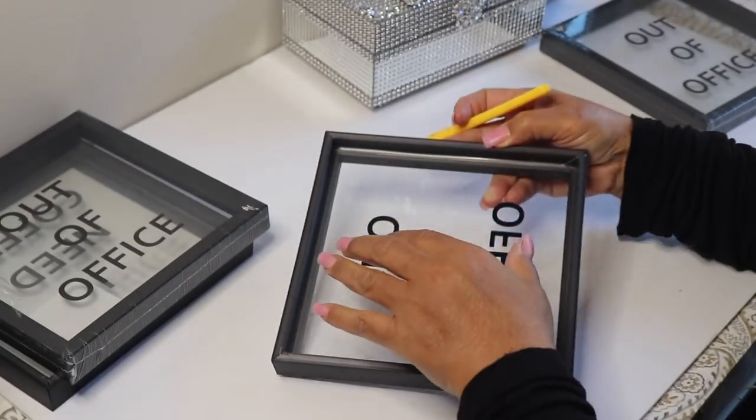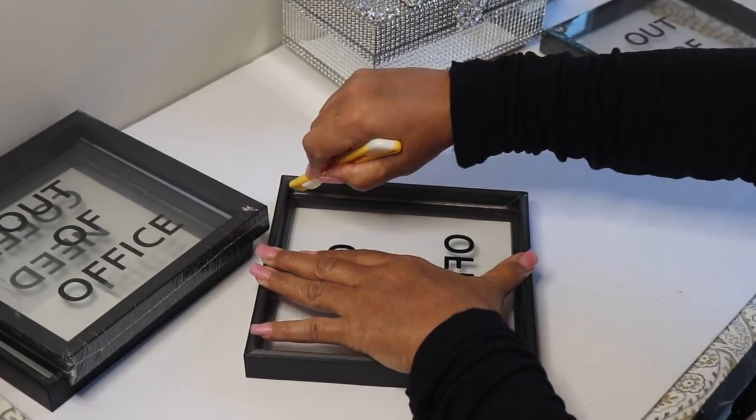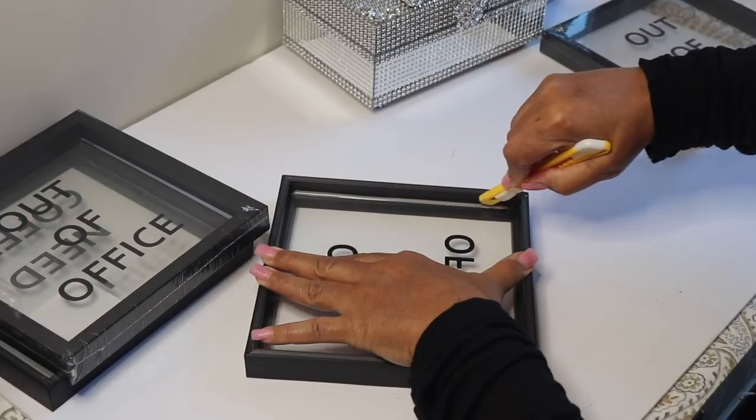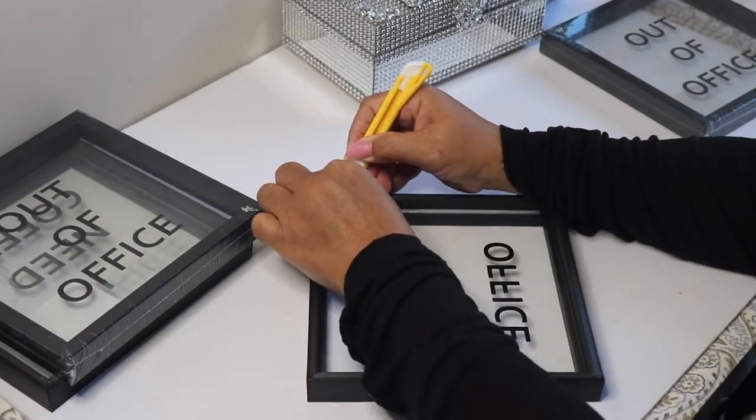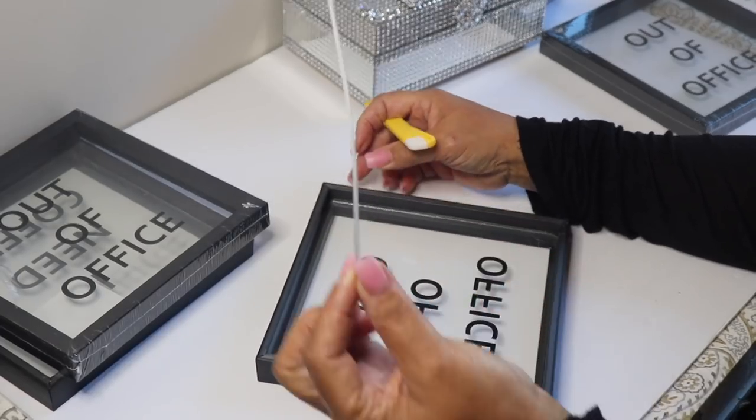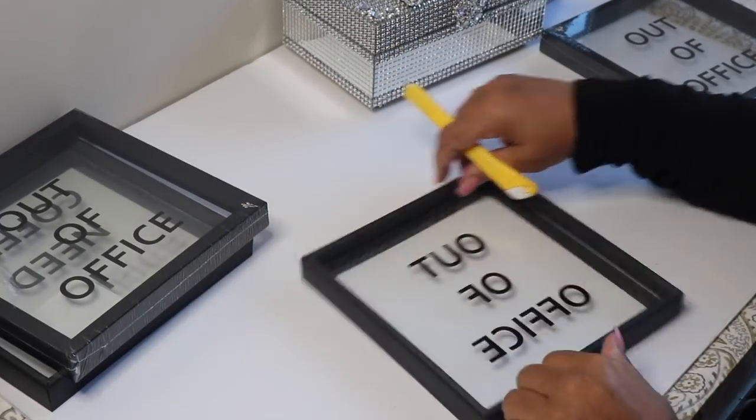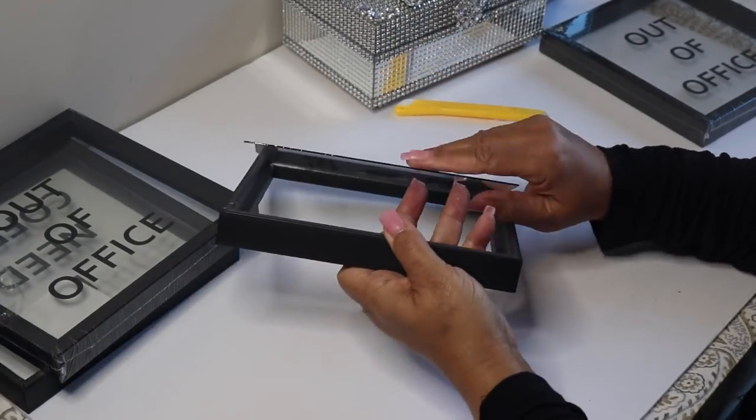I used a utility knife to remove the glass from the frames by cutting the rubbery strip of glue away. I removed the glass from all four frames.